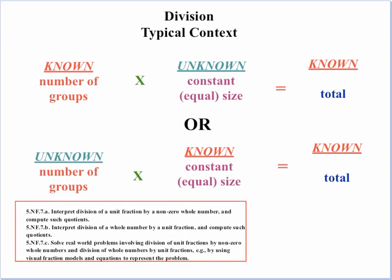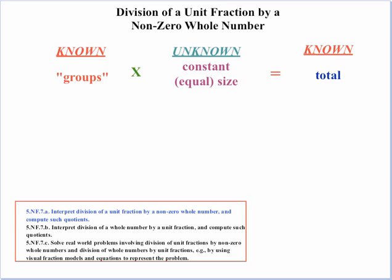The typical context for division — and this is for whole numbers, which is what the kids are used to — would be where you know the total and the number of groups and you're looking for the size of the groups, or vice versa: you know the total and the size of the group and you're trying to figure out how many groups. So let's look at 7A first. The most typical and easiest context for division of a unit fraction by a non-zero whole number is when you know the total and the groups and you're looking for the size of the groups.